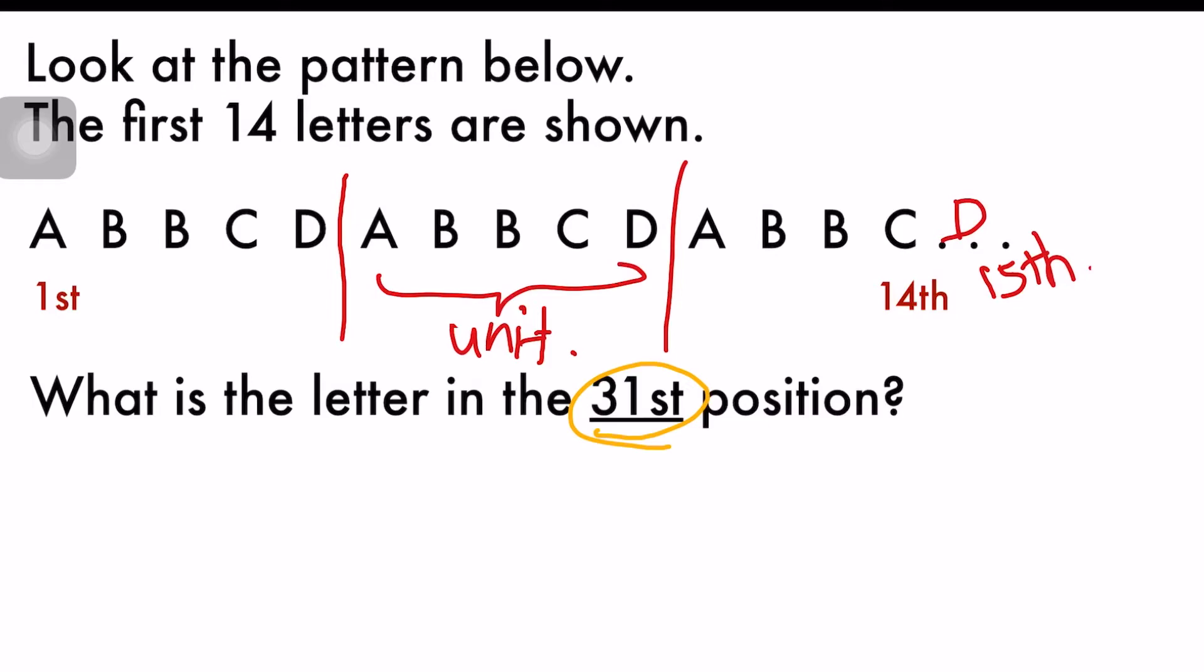Because it is a small number. So D is 15, then you go 16, 17, 18, 19, 20, 21, 22, 23, 24, 25, 26, 27, 28, 29, 30, and 31. 31st position. And I get it. My answer will be A.